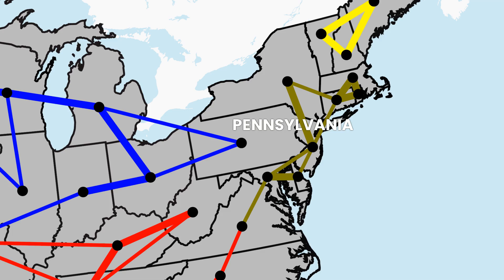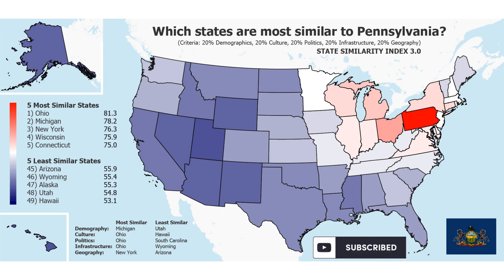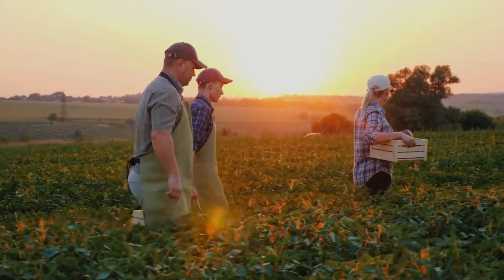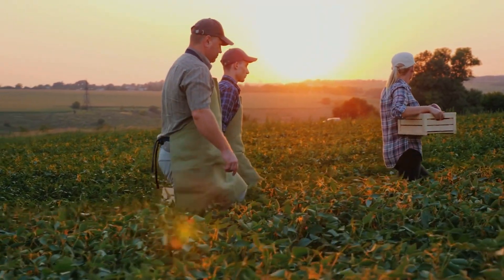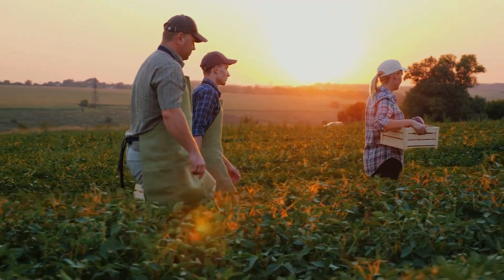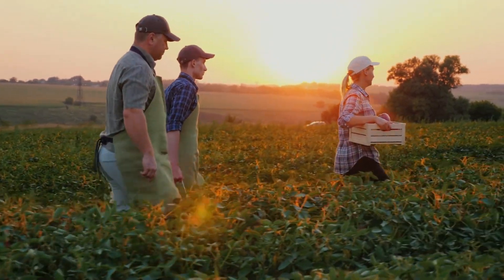Despite being part of the Northeast region, Pennsylvania has many characteristics of Midwestern states, in particular the Great Lakes region. In fact, Ohio and Michigan are the two most similar states to Pennsylvania. Unlike most other states in the Northeast, a large portion of the population in Pennsylvania and the Midwest has German ancestry.